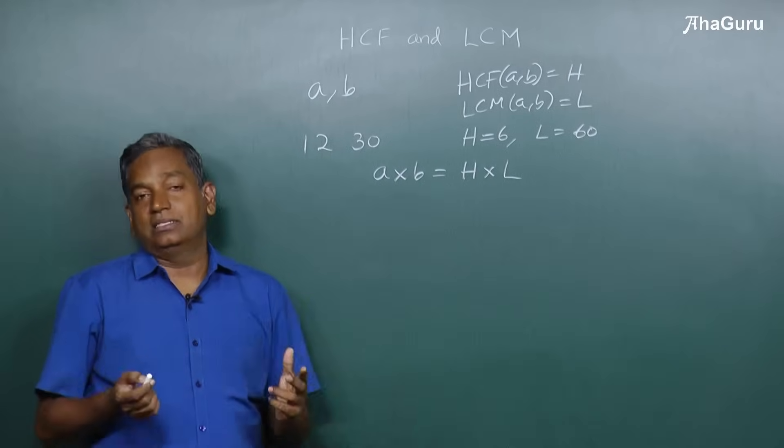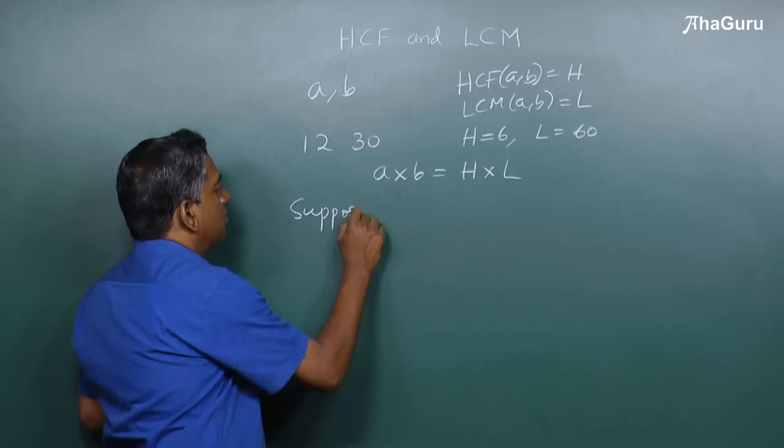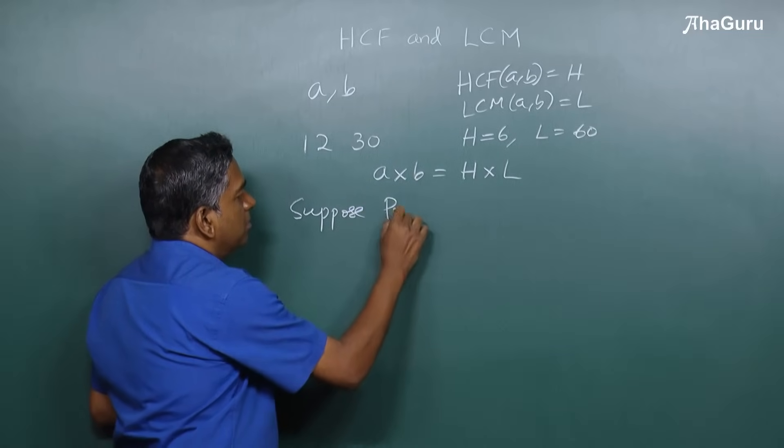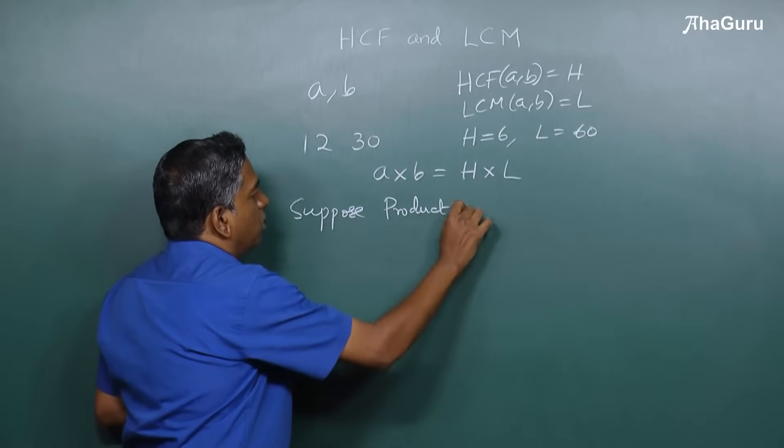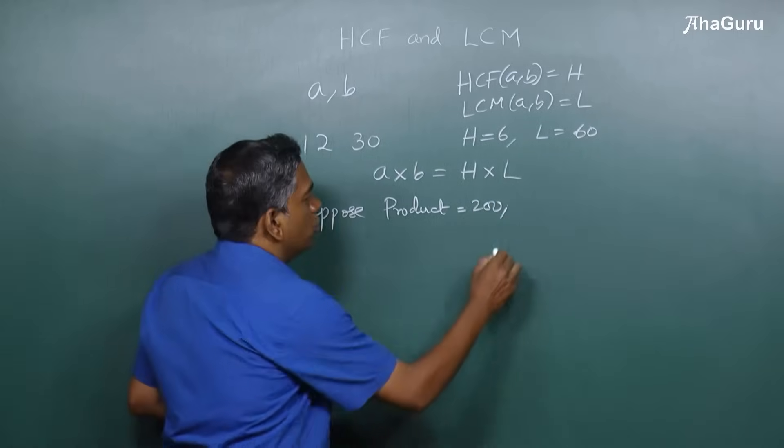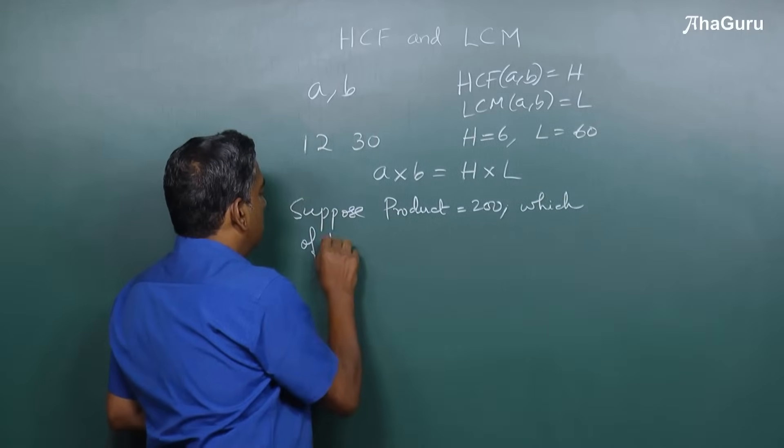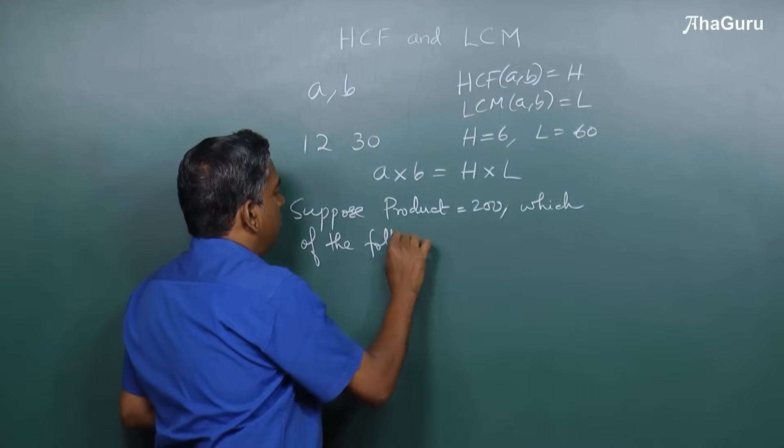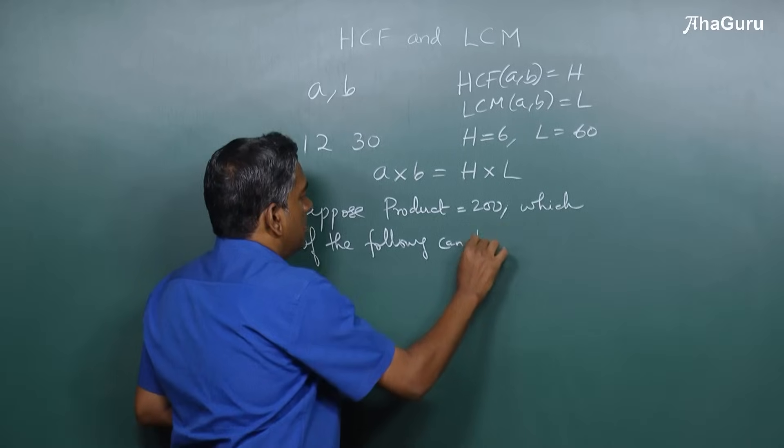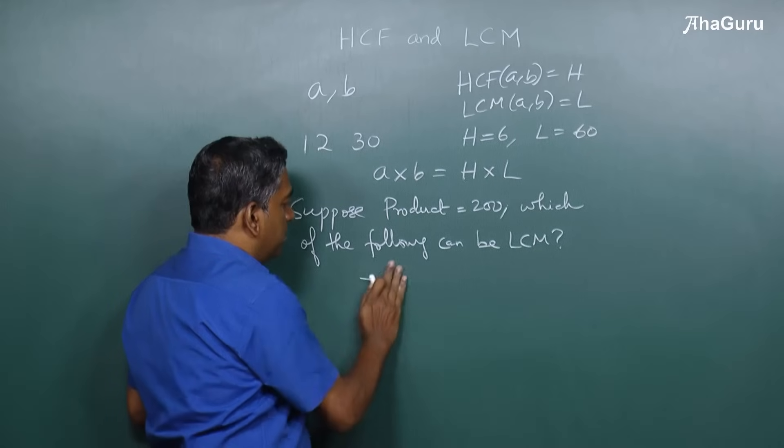Based on this idea, sometimes questions are asked. For example, suppose the product AB is 200. Some people will ask you which of the following can be the LCM.